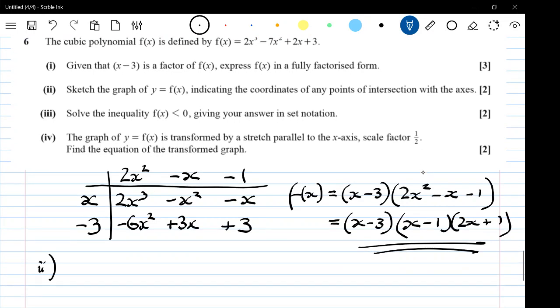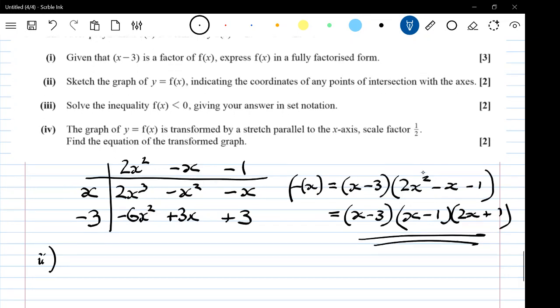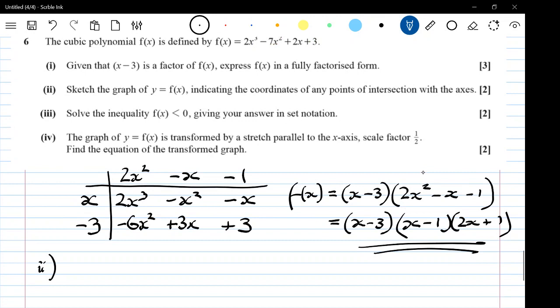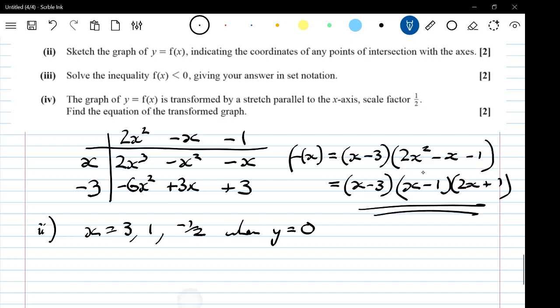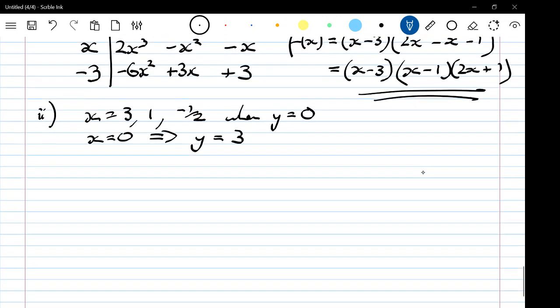Part 2. Sketch the graph, indicating the coordinates of any points of intersection with the axes. Well, what I've seen from this is that the graph is going to intersect the axes at x equals 3, 1, and minus 1 half when y is 0. And if x is 0, I'm going to get y equals plus 3. So they're my points of intersection, just bearing that in mind.